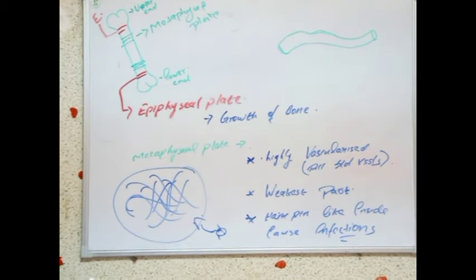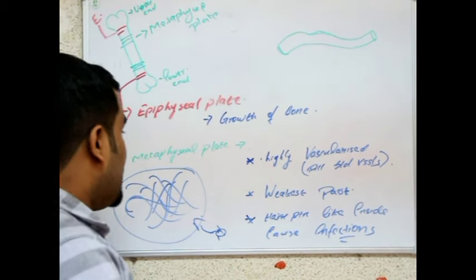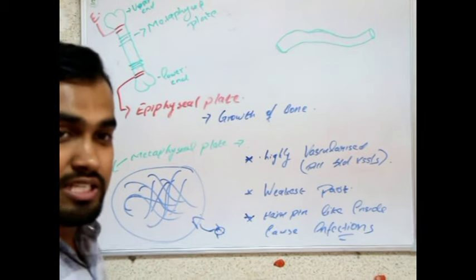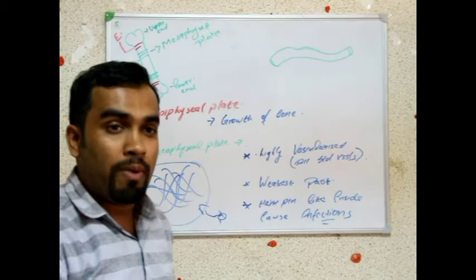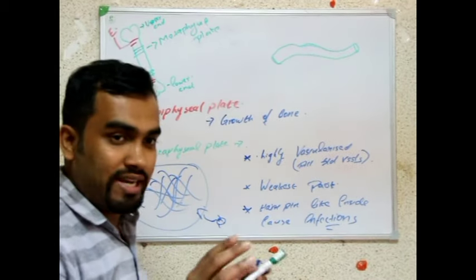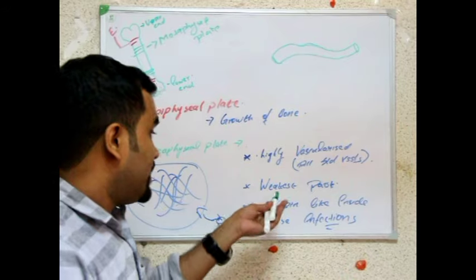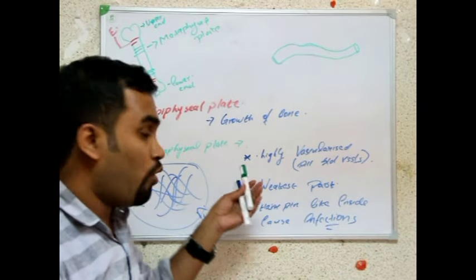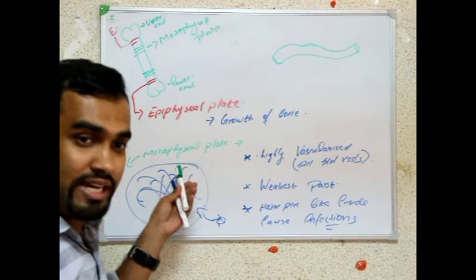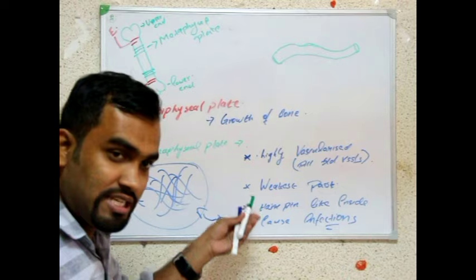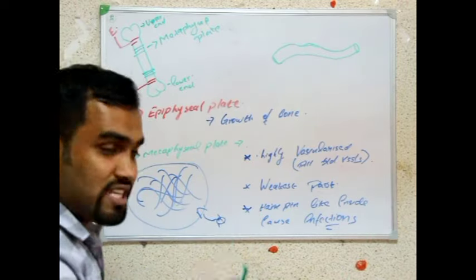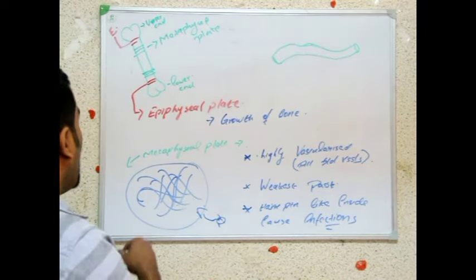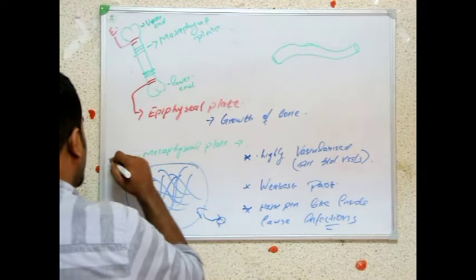Another important thing is that in many children there is osteomyelitis. The metaphyseal plate is the weakest part, so osteomyelitis commonly occurs in the metaphyseal plate, as well as fractures of bone. Osteomyelitis in children occurs in the metaphysis.